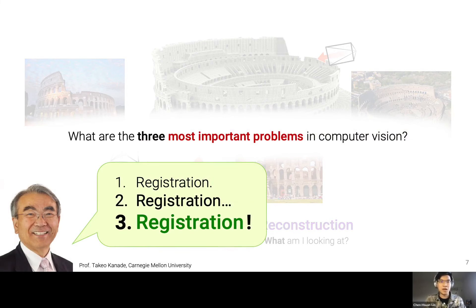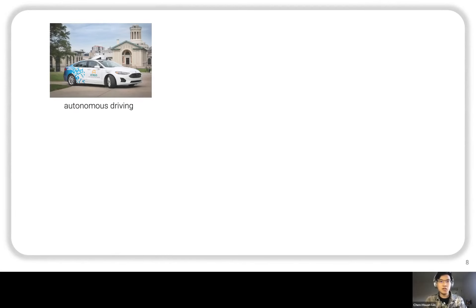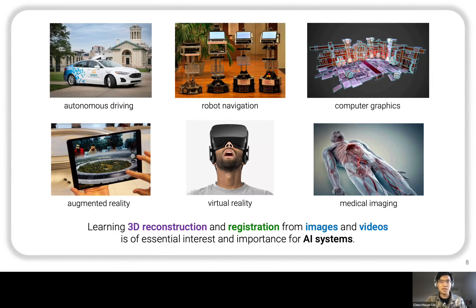The importance of registration is highlighted by a famous quote from Professor Takio Kanade: the three most important problems in computer vision are registration, registration, and registration. Registration has indeed served as a core fundamental of how efficient computer vision algorithms are designed, even in today's modern era of deep learning. The ability for machines to learn 3D reconstruction and registration has a wide range of applications — from autonomous driving and robot navigation to computer graphics and AR/VR.